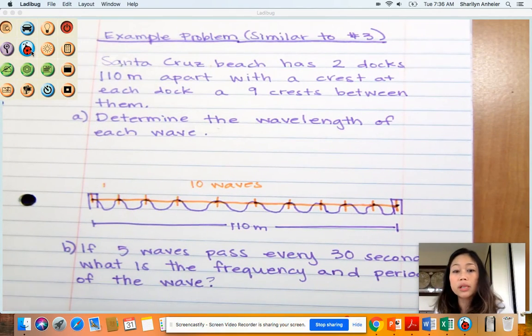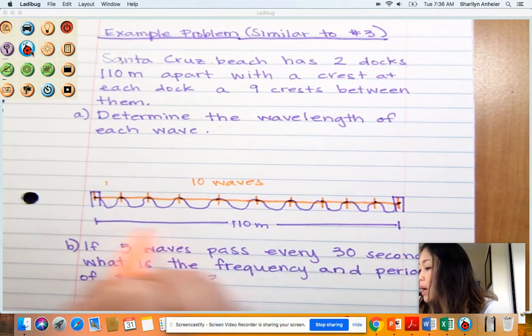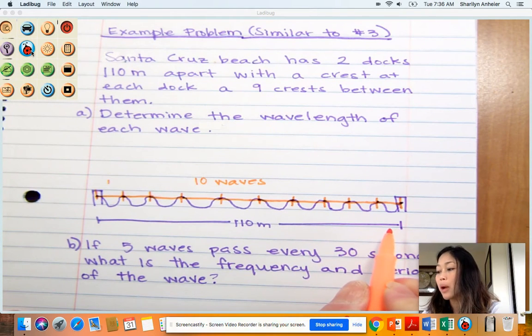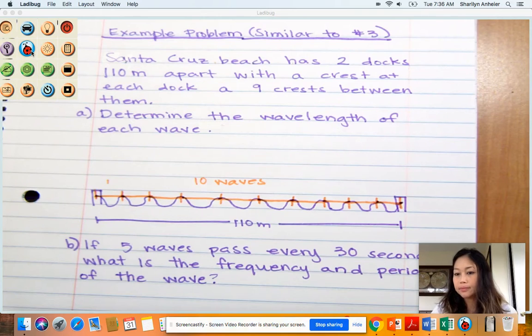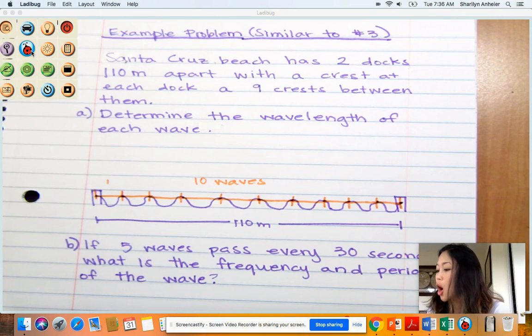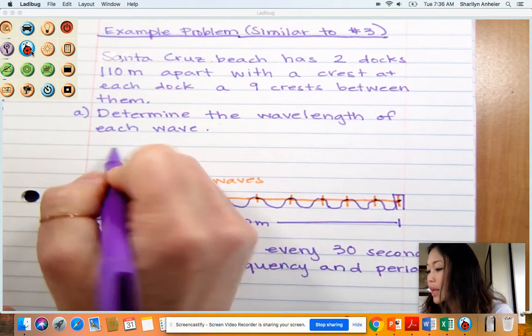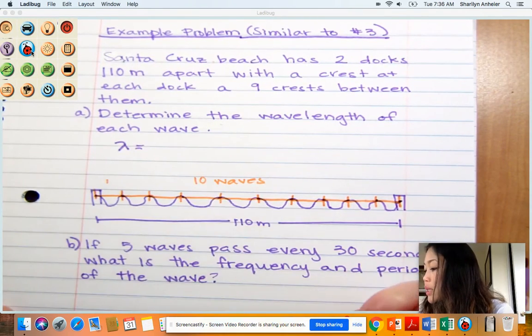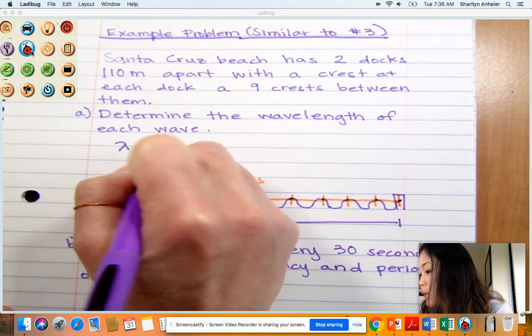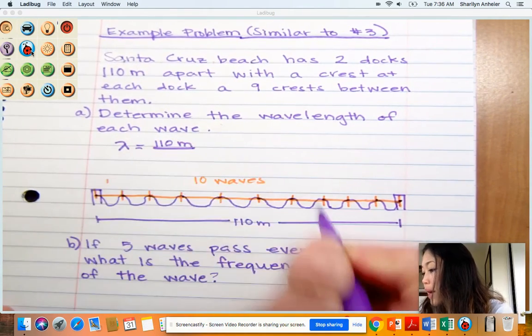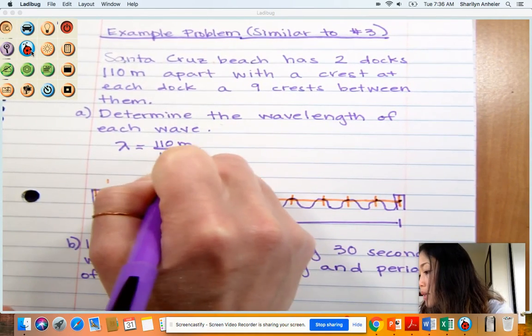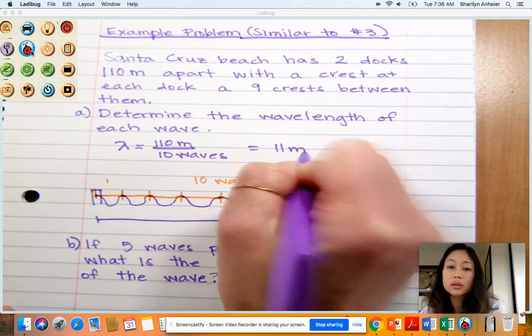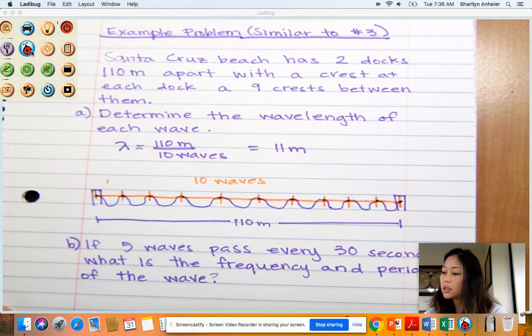I also know that those 10 waves span 110 meters. So in order to find my wavelength—this is your symbol for wavelength, lambda, a Greek letter—you take the total 110 meter length, divide it by 10 waves, and you get 11 meters for each wave. This is your wavelength.